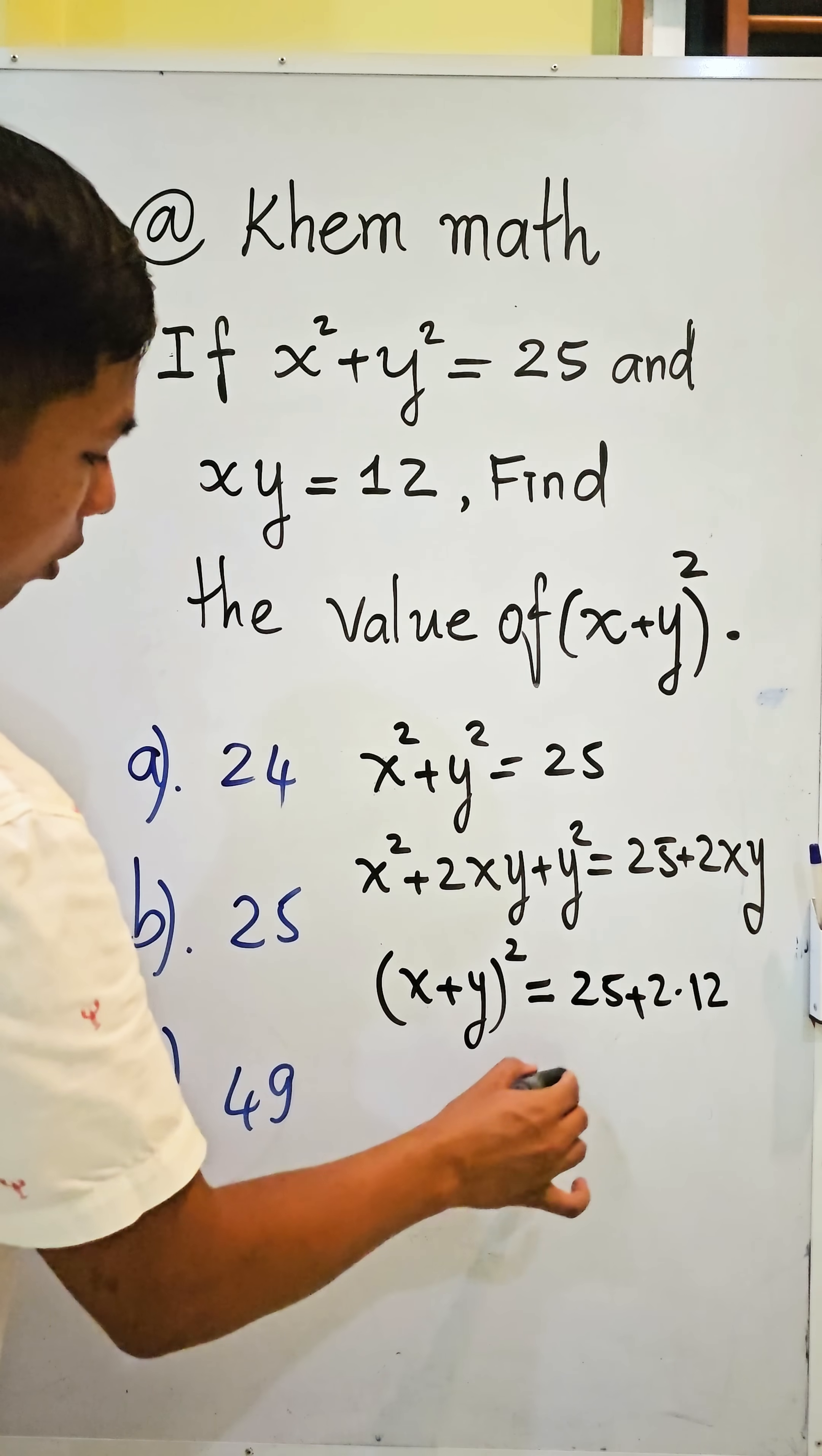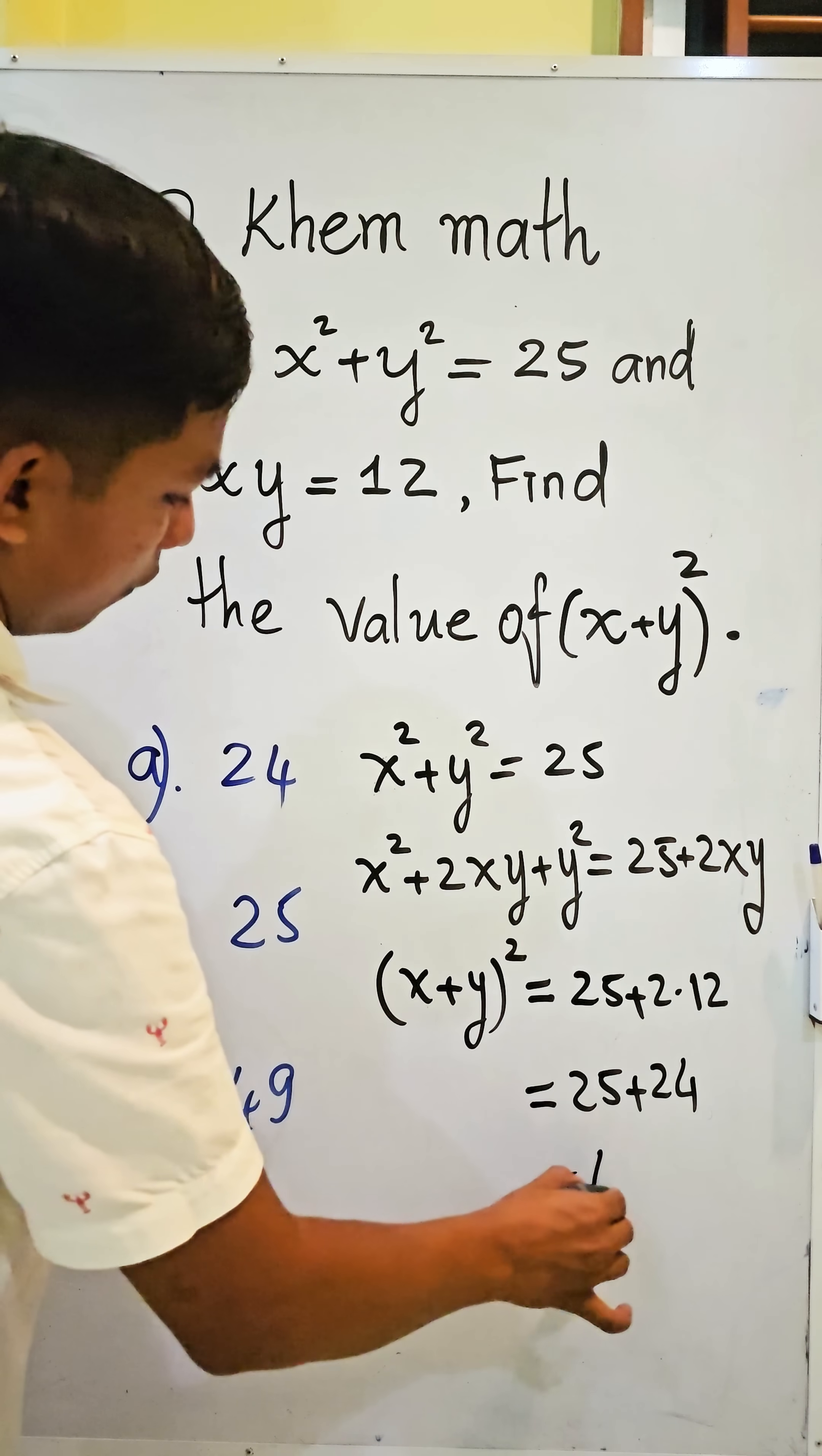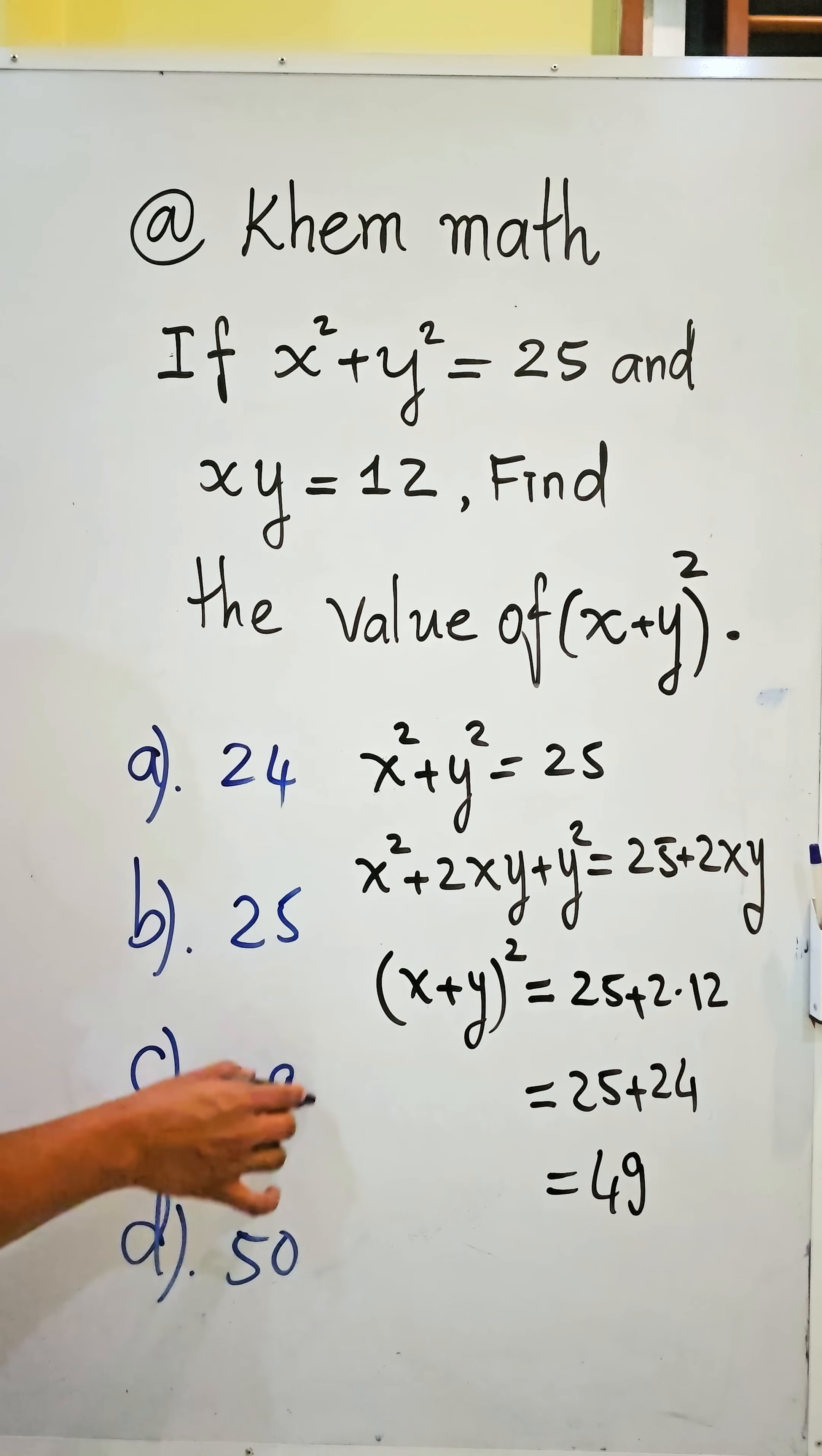And we get this equal 25 plus 24 and equal 49. So our answer is C.